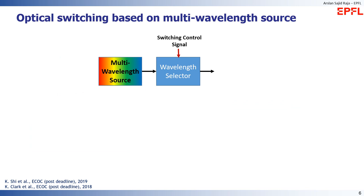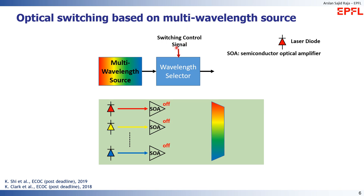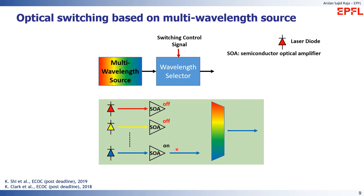To switch data at sub-nanosecond timescales, it is critical to use an additional element known as a wavelength selector, which separates the switching function from the multi-wavelength source. This method uses sources that continuously emit individual colors. A switching element known as a semiconductor optical amplifier (SOA) selects between colors: applying a control signal to the first SOA transmits red light, to the second SOA transmits yellow, and to the last SOA transmits blue. This has enabled sub-nanosecond optical circuit switching.